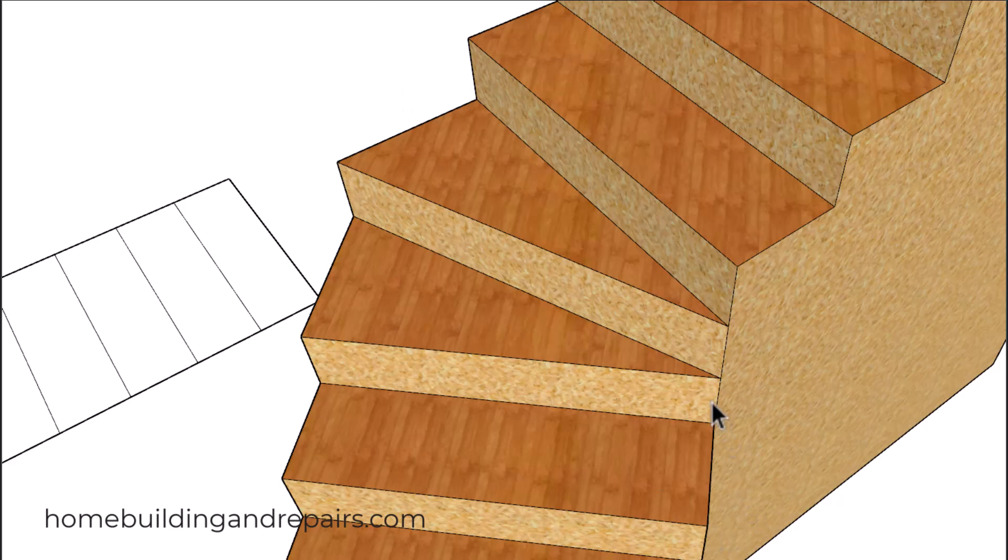And the problem with this one here is that we might not have the minimum walk line depth. And that's usually going to be 9, 10, or 11 inches depending upon what the stairway is going to be used for.